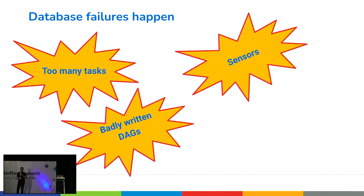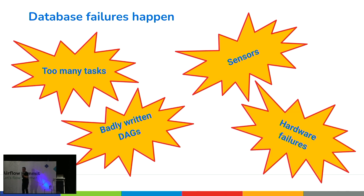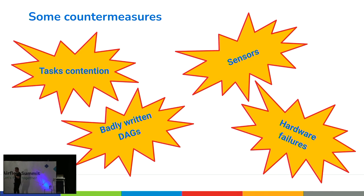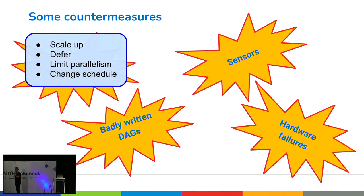The Variable.get() operation executes a database query every time it's called. If you use it — as shown in the documentation — in the main body of your DAG rather than inside a task, it will query the database on every DAG parsing cycle, potentially overwhelming the database. Hardware failures can also degrade database availability, and the blast radius is quite massive — all processes running in your Airflow instance cease to exist.